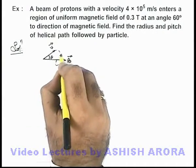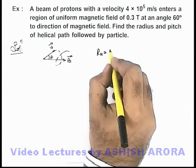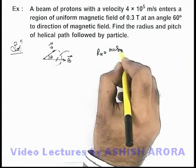And in this situation for the helical path, the radius of helix is given by mv sin θ / qB.